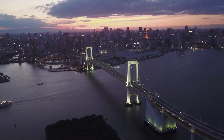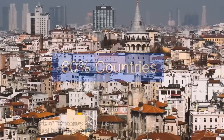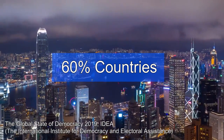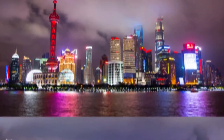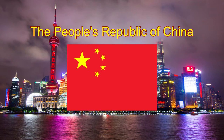Since World War II, the quality and quantity of democracies has increased, with 60% of countries being considered democratic. However, there is one notable outlier to this trend: China. The People's Republic of China is one of the few countries which runs on a communist government operating system. To understand this political system, we will look at an overview of the Chinese communist structure along with its functions and relation to the economy.